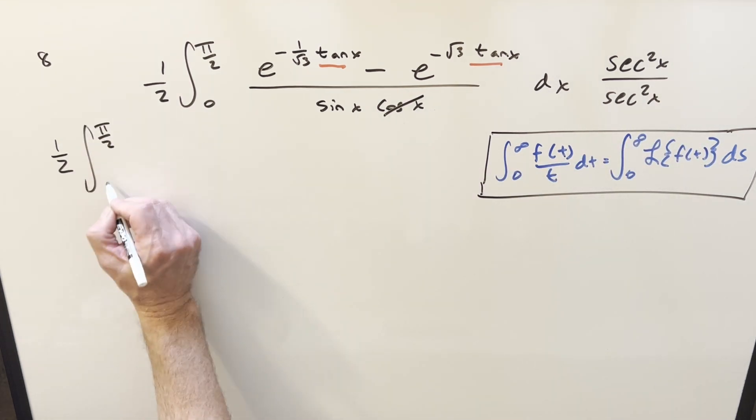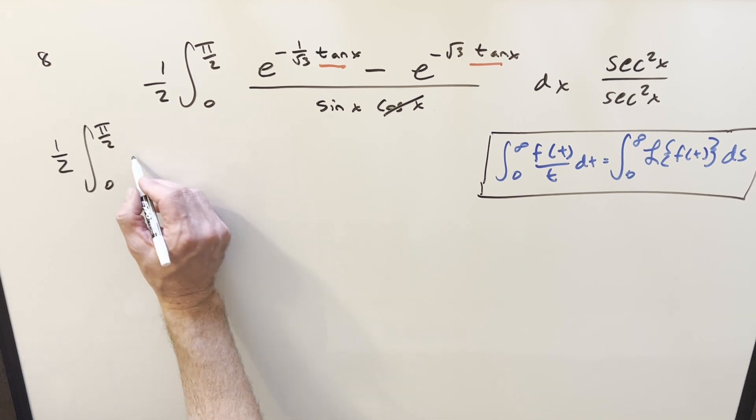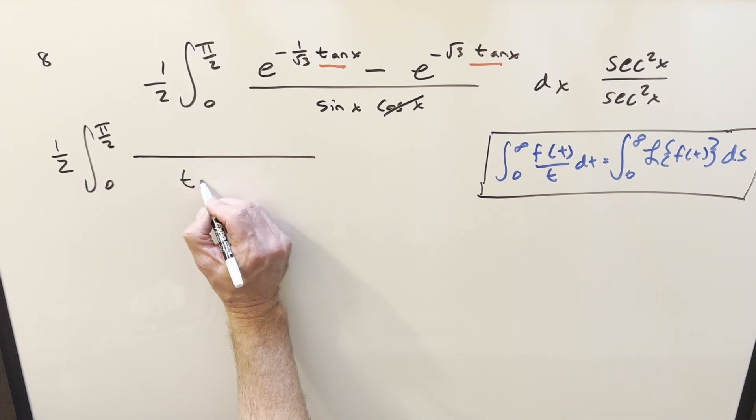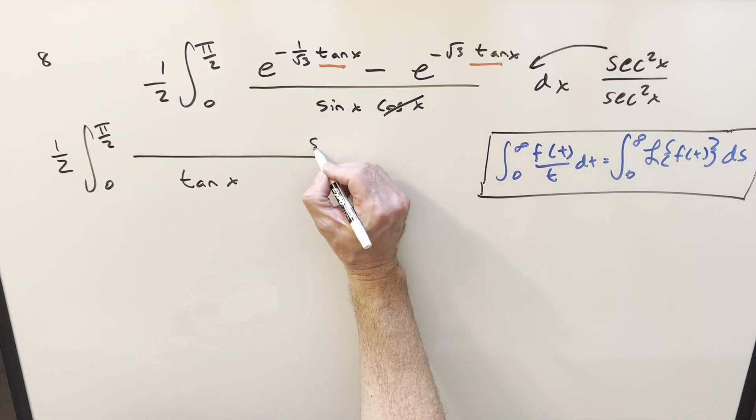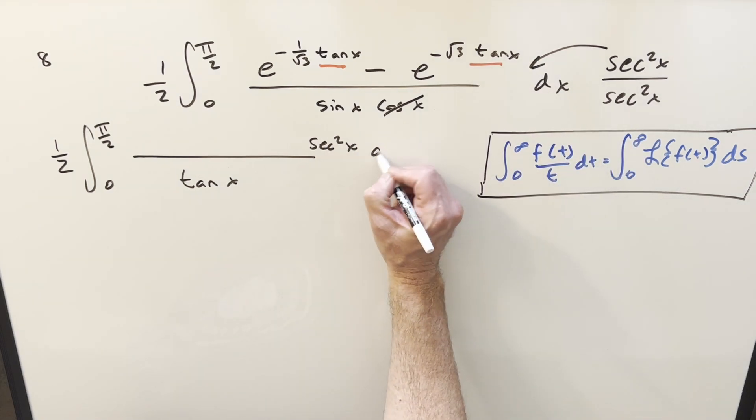So what's going to happen, we're integrating from 0 to pi over 2. And now the denominator just becomes tan of x. I'll just multiply this in here and leave it. So we just have secant squared x dx.